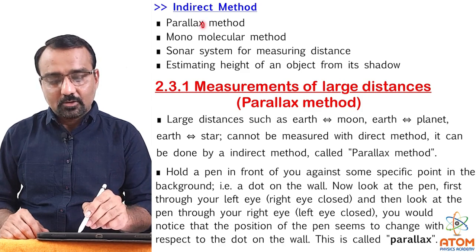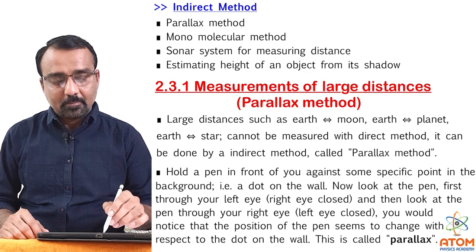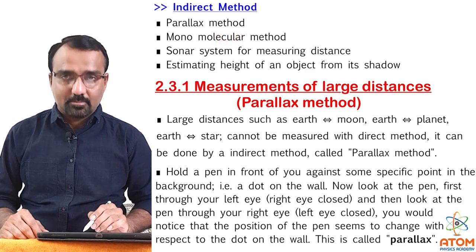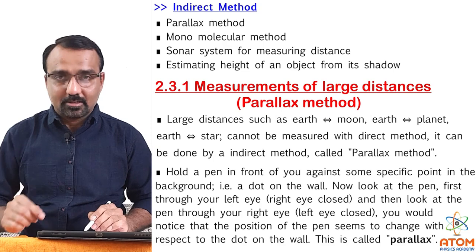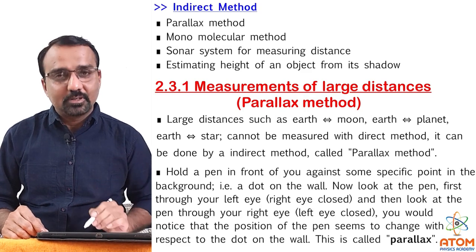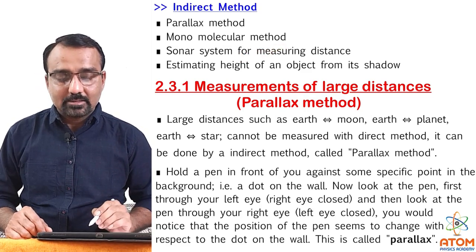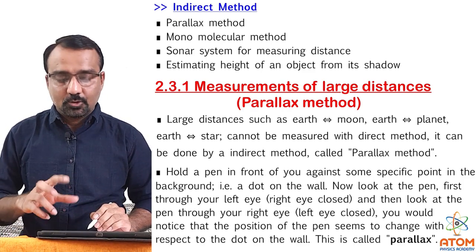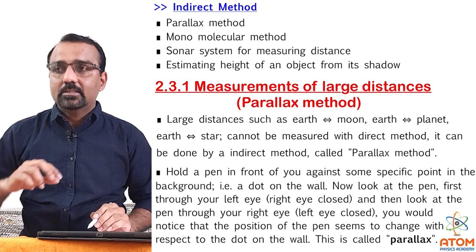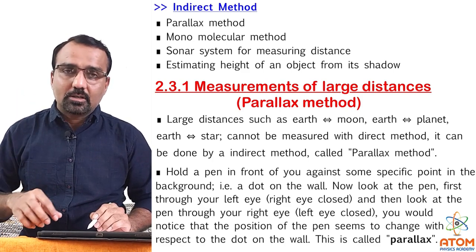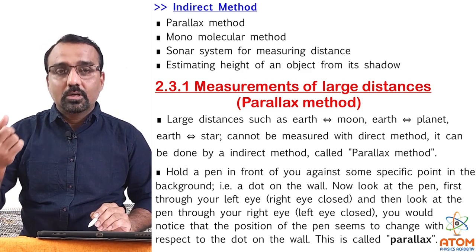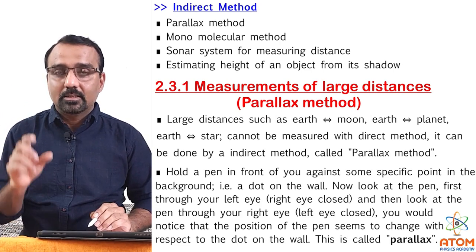Here are a few examples of indirect methods. The first one is the parallax method, which is the next topic we are going to learn. Then is the monomolecular method, which is used to measure the diameter of any molecule of any substance — that we will learn later on. Next is the sonar system of measuring distance. You might have heard about sonar — it is used in many places but mostly in submarines. When a submarine is in seawater, visibility is not more than 20 to 30 feet, so to detect any object at a distance, they use sonar.